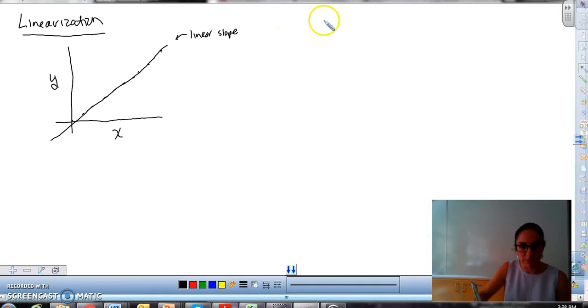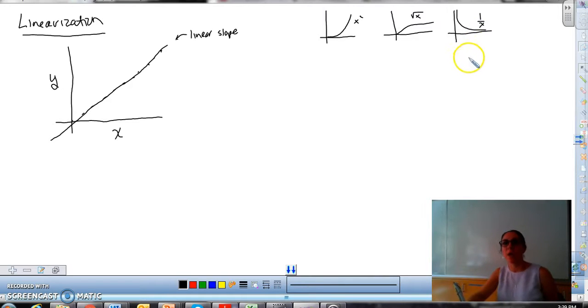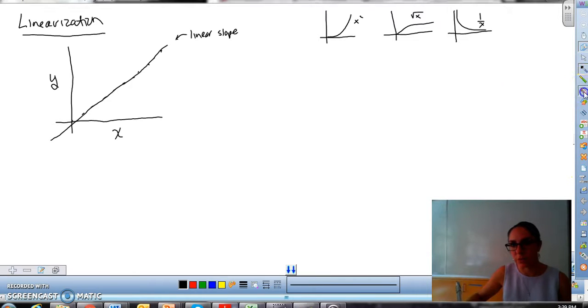So a non-linear slope, just to give you some examples, would be something like this. This is like an X squared graph. Or you can have something like this. This is a square root of X graph. Hopefully this is all review. You can have something like this. Depending on the shape, it could be X, one over X, one over X squared. Anyway, these have curves in them. So they're non-linear. So we're talking about slopes that make linear or straight lines.